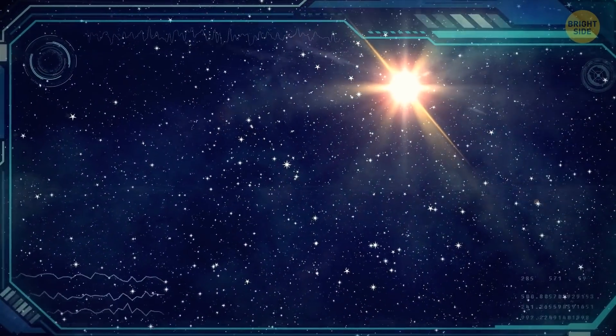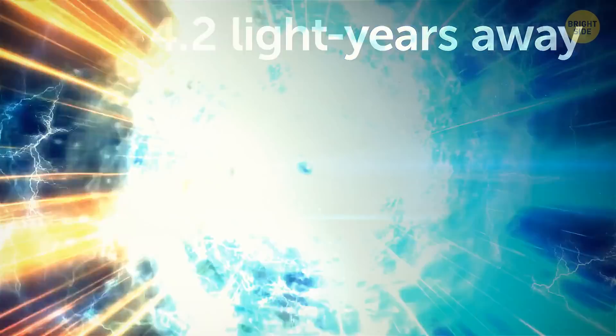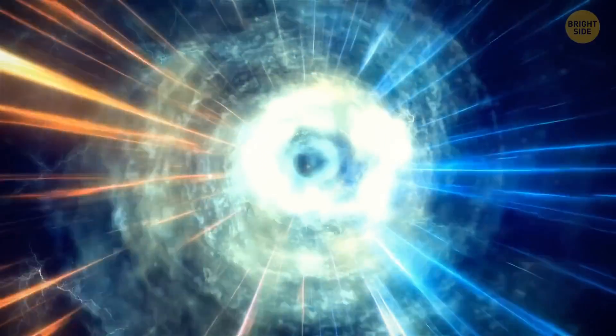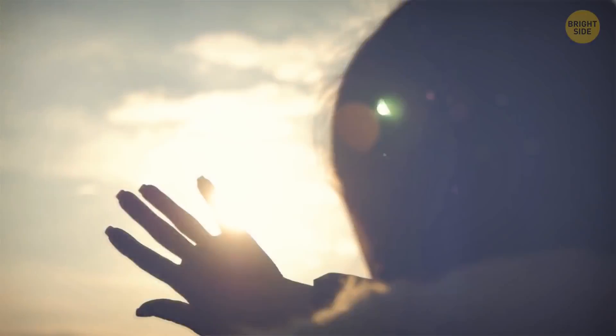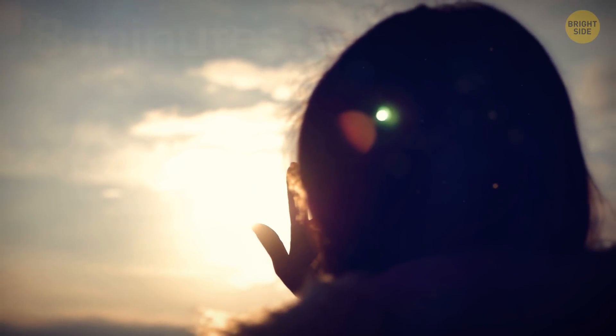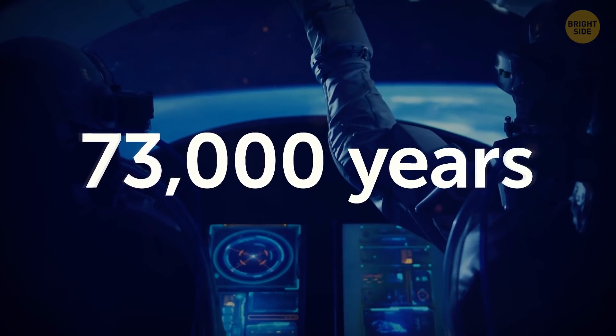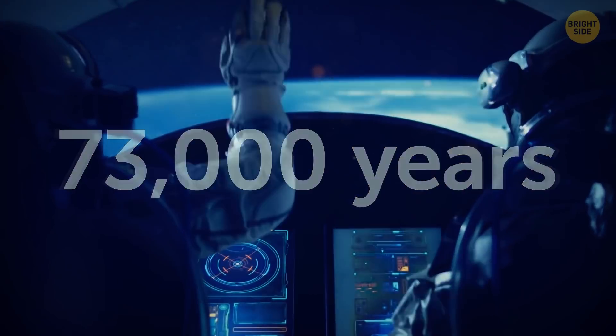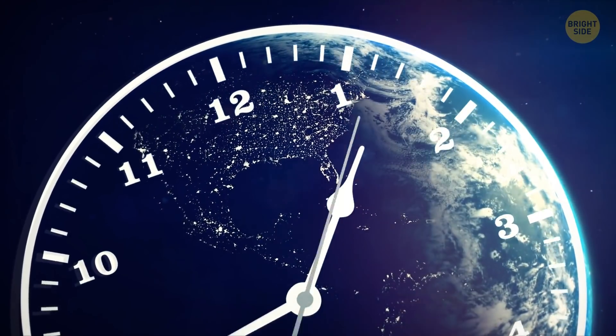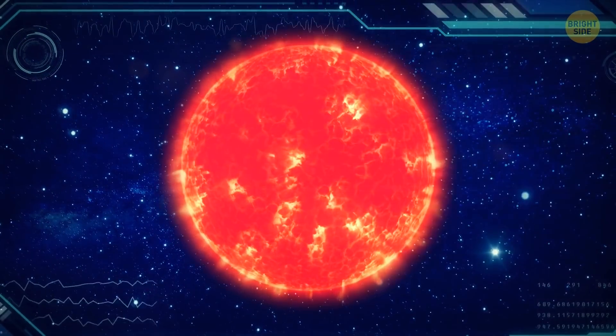Proxima Centauri is also eight times as light as the Sun. This star system is 4.2 light-years away. That's how long it takes a photon of light to travel from this star to Earth. By comparison, it only takes eight minutes for sunlight to reach our planet. If you decided to travel to Proxima Centauri, it would take you about 73,000 years to fly there in a conventional rocket.